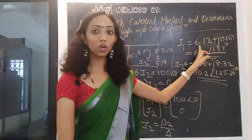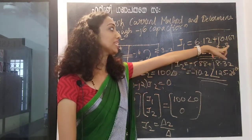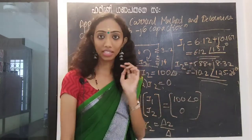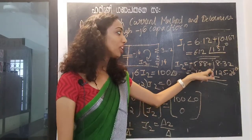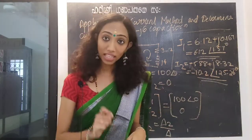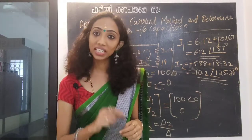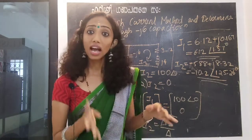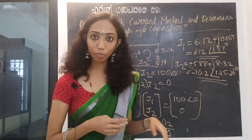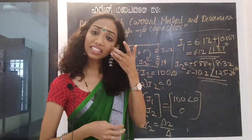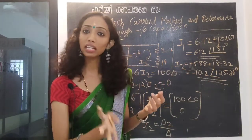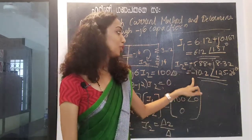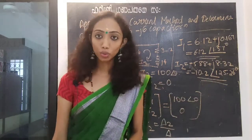I1 solve: the rectangular form is 6.12 plus J0.167. That will polar convert to 6.12 angle 1.57 degrees. And the current I2 is equal to minus 5.88 plus J8.32 in rectangular form. Converting to polar: I2 is equal to minus 10.2 angle 125.26 degrees.